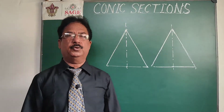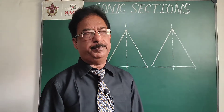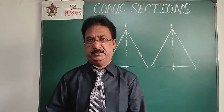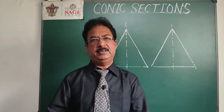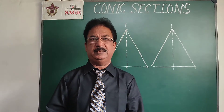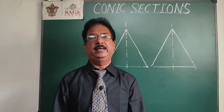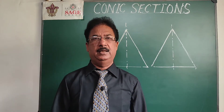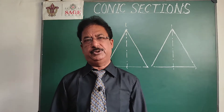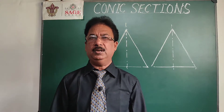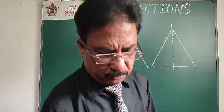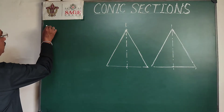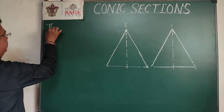Hello students, today I am here with another topic on engineering graphics. The topic will be conic sections. As the name suggests, conic sections are the sections obtained by intersection of a right circular cone by a plane at different positions with respect to its base or axis. We call them conic because they are the part of a cone.